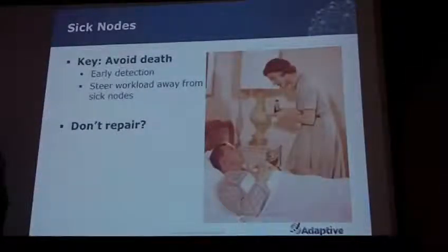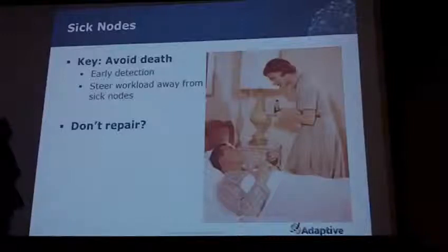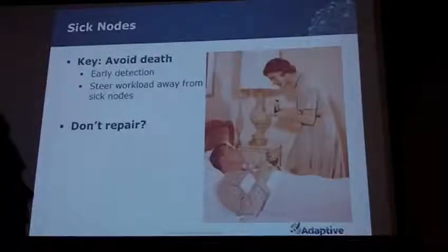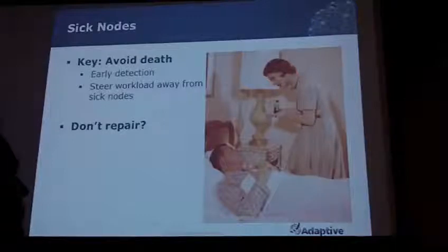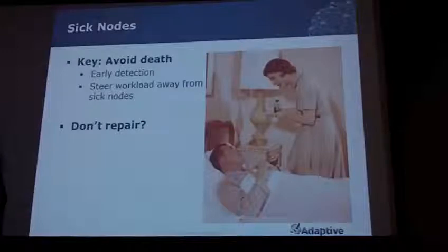Now let's talk about sick nodes — it's not dead yet, like the Monty Python bit. What you want to do is detect signs of sickness before the node goes down so you can steer jobs away before the job ever starts. You want to avoid starting a job on a sick node because it's probably going to die, and if it fails mid-job you'll have to restart — and some jobs run for days. An interesting approach used by large clusters like Google: when you have sick and dead nodes, don't necessarily go fix every node — just mark it as bad, put no workload on it, and replace the whole rack when you have enough bad nodes.